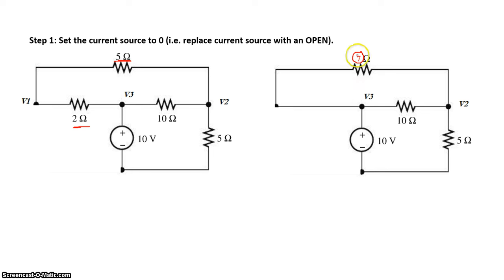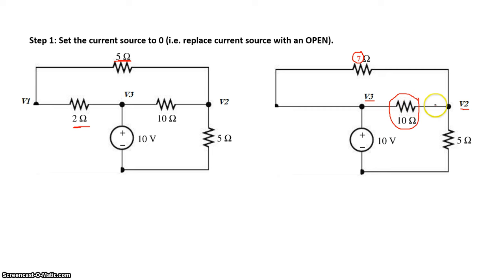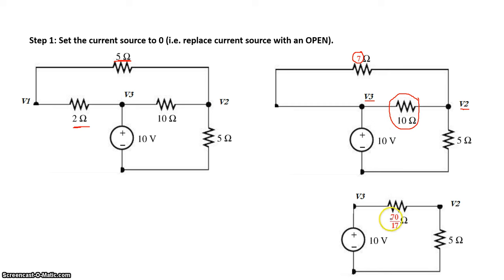If we look carefully again, this 7 ohm resistor is between nodes V3 and V2. Similarly, this 10 ohm resistor is also between nodes V3 and V2. When a resistor has the same two nodes on both sides, those resistors are in parallel. In other words, the 7 ohm and the 10 ohm resistors are in parallel. Using the parallel resistor formula: 7 times 10 divided by 7 plus 10 gives us a combined resistor of 70 over 17 ohms.